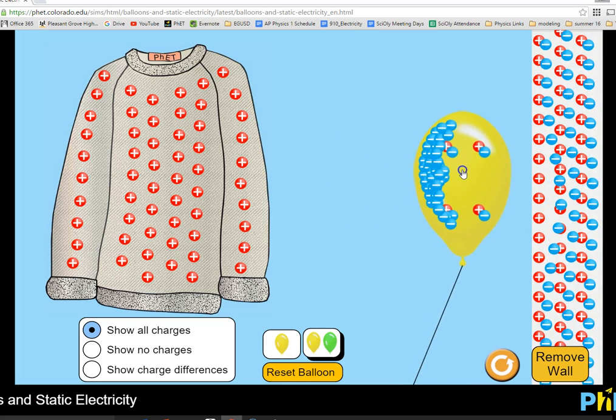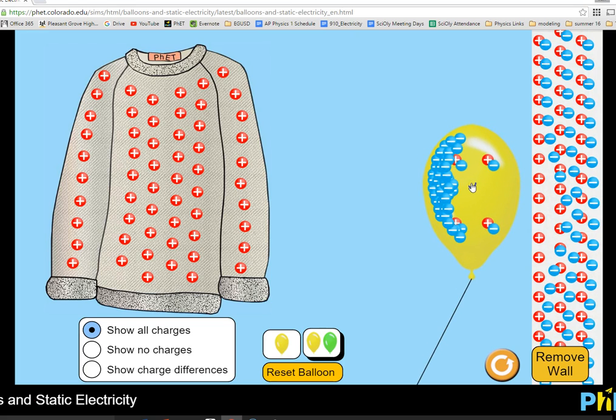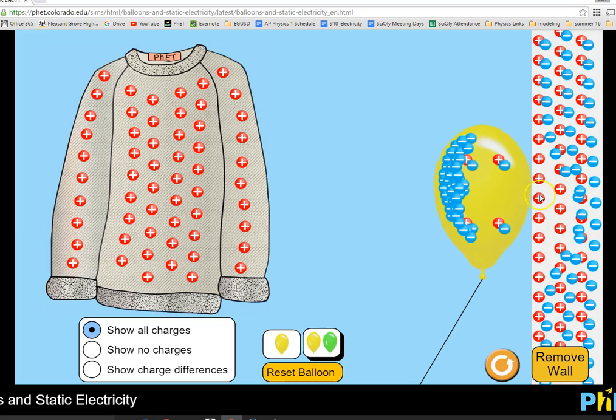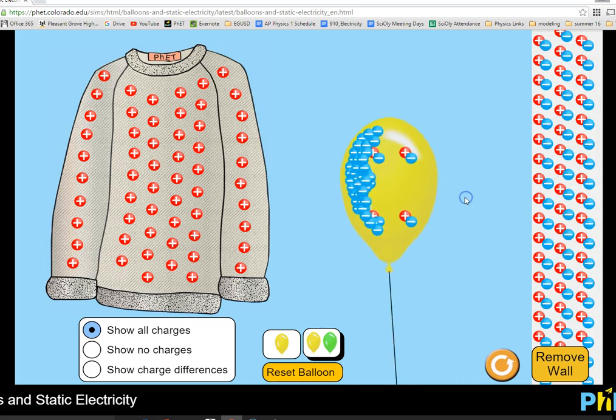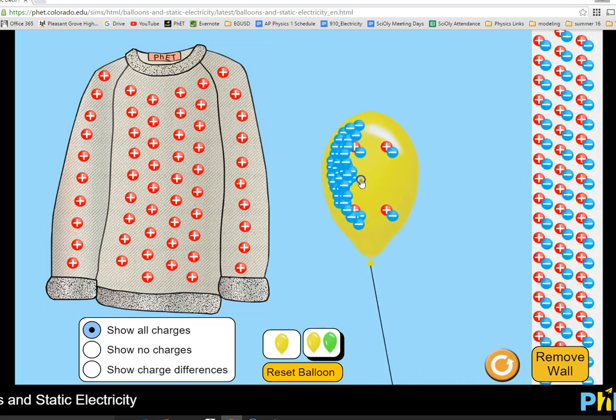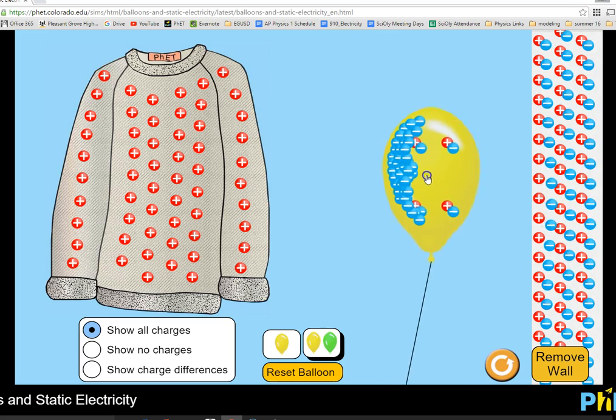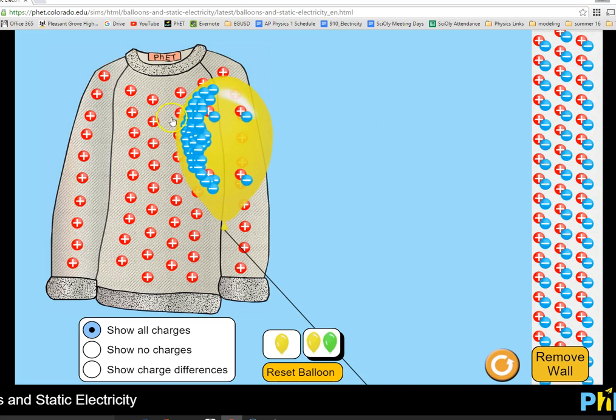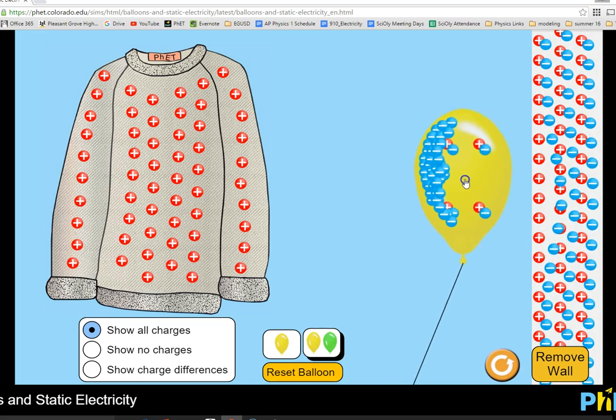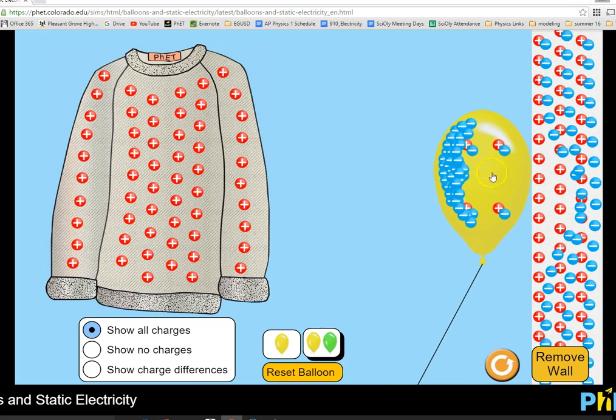So even though the wall is neutral, the positive end is very close to the balloon. That's going to attract. When I let go of the balloon, notice it goes over. Those negatives are now attracted to the positives. So even though the wall itself is neutral, we're able to attract it. Notice that the shirt is stronger because of that big positive over there compared to the wall that's only positive close.